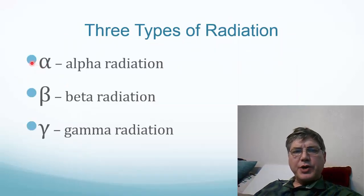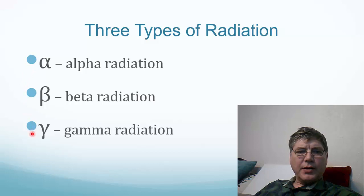There are three types of nuclear radiation: alpha, beta, and gamma radiation, named after the first three letters of the Greek alphabet by Ernest Rutherford himself of the gold foil experiment, which discovered the nucleus of the atom.